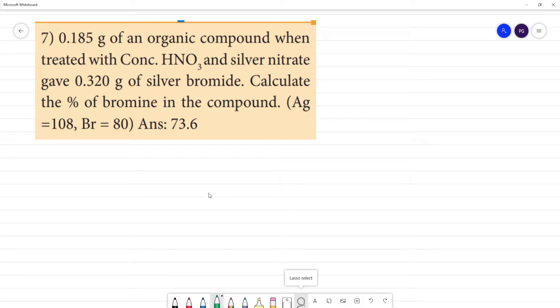If we do a quantitative analysis we can write bromine. That is halogens. What is halogens? First, one organic compound. Organic compound. What is the estimation of silver?